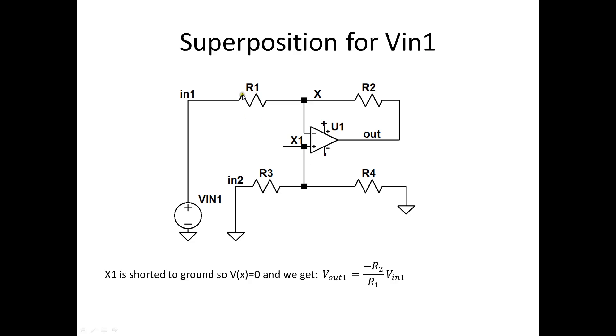So, superposition for V1. V2 is shorted. And so, both ends of these resistors are at ground. No current can flow into that pin. That means VX1 is at ground. That means VX is at ground. That means Vout equals minus R2 divided by R1 times VN1.